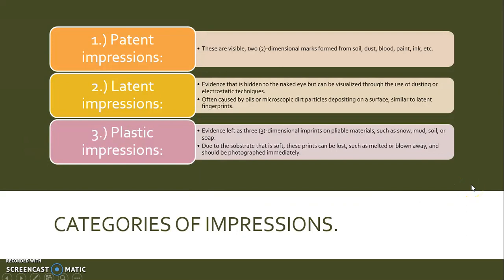Categories of impressions. Number one, patent impressions — visible two-dimensional marks formed from soil, dust, blood, paint, ink, etc. Number two, latent impressions — evidence hidden to the naked eye, but visualized through dusting or electrostatic techniques, often caused by oils or microscopic dirt particles depositing on a surface, similar to latent fingerprints. Number three, plastic impressions — evidence left as three-dimensional imprints on pliable materials such as snow, mud, soil, or soap. Due to these materials being soft, prints can be lost — melted or blown away — and should be photographed immediately.